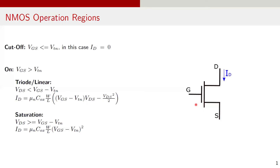Before diving into inverter transfer characteristics, let's first review the operation of NMOS and PMOS transistors. For an NMOS transistor, we will denote terminals as S for source, D for drain and G for gate. The drain current is I sub D. The operation of NMOS can be divided into three regions based on the voltages applied to the gate, source and drain terminal.